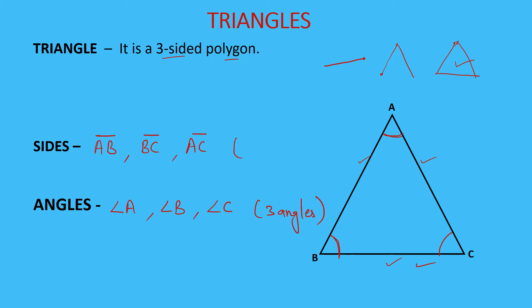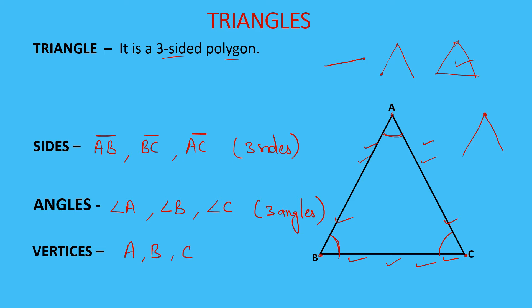Now, can you see these points — point A, point B, and point C? Sides AB and AC meet at point A; this common meeting point of two sides is called a vertex. Similarly, for sides AB and BC the common point is B, and for sides AC and BC the common point is C. These are called vertices. So a triangle has three vertices: A, B, and C. Note: when writing vertices we write only A, B, C, but when writing angles we use the angle symbol — angle A, angle B, angle C.